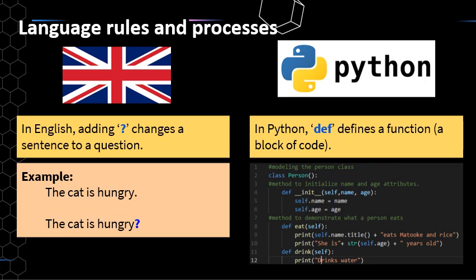Likewise, in another language — Python, which is a coding language — 'def' defines a function, a block of code. So anytime you see that in the script, it's referring to a particular block of code and introducing it into the script. It's acting as a process, just like our operations act as processes in these languages.